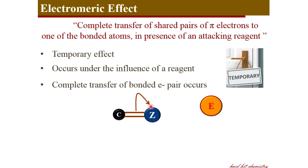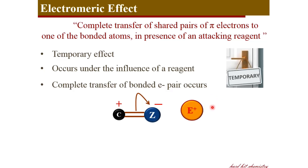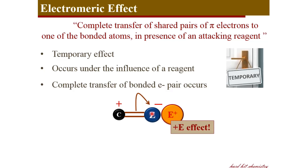This electron cloud now moves on to atom Z, and atom Z which gains the electron pair will have a negative charge, while the carbon atom which loses its electron pair will have a positive charge. If this reagent is a positively charged one, this positively charged reagent can now attach to this negative center. Such an effect is called a positive electromeric effect or plus E effect — the reagent attaches to that atom towards which the pi electrons are displaced.